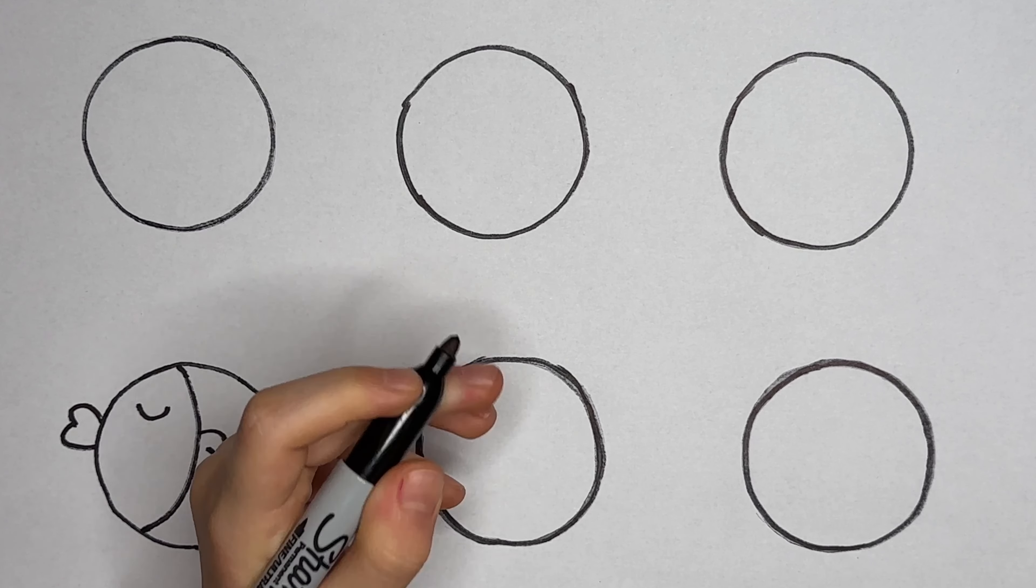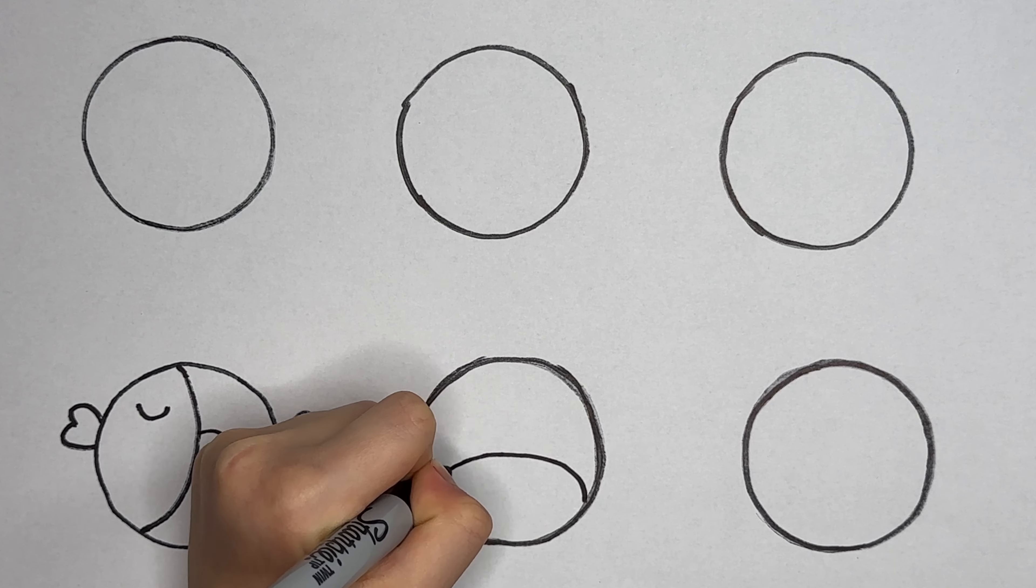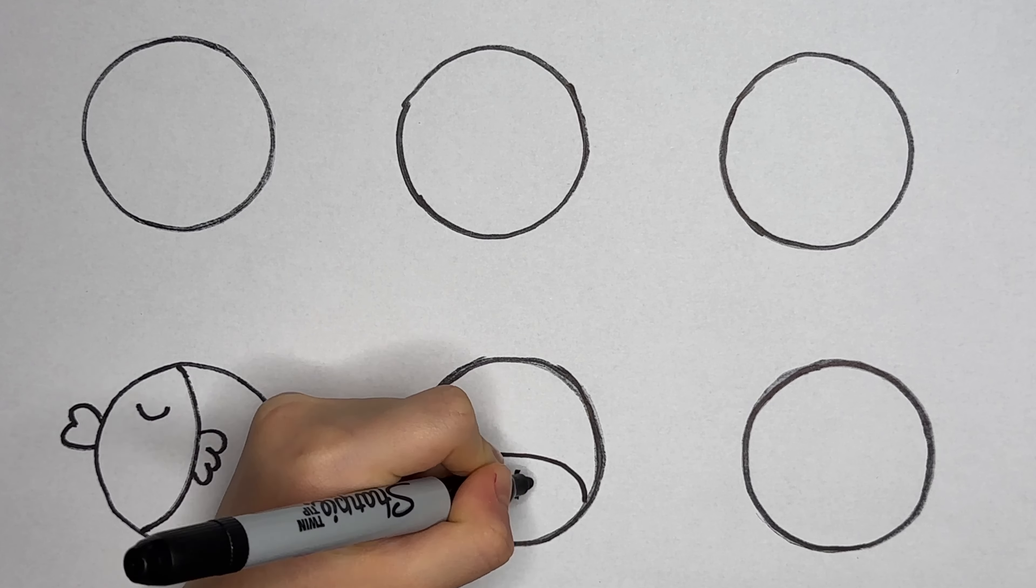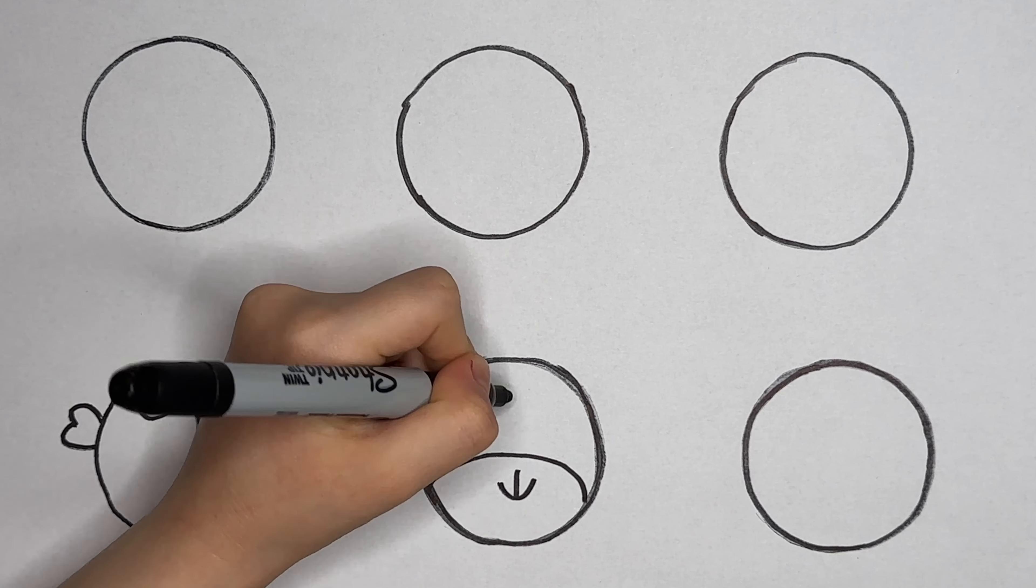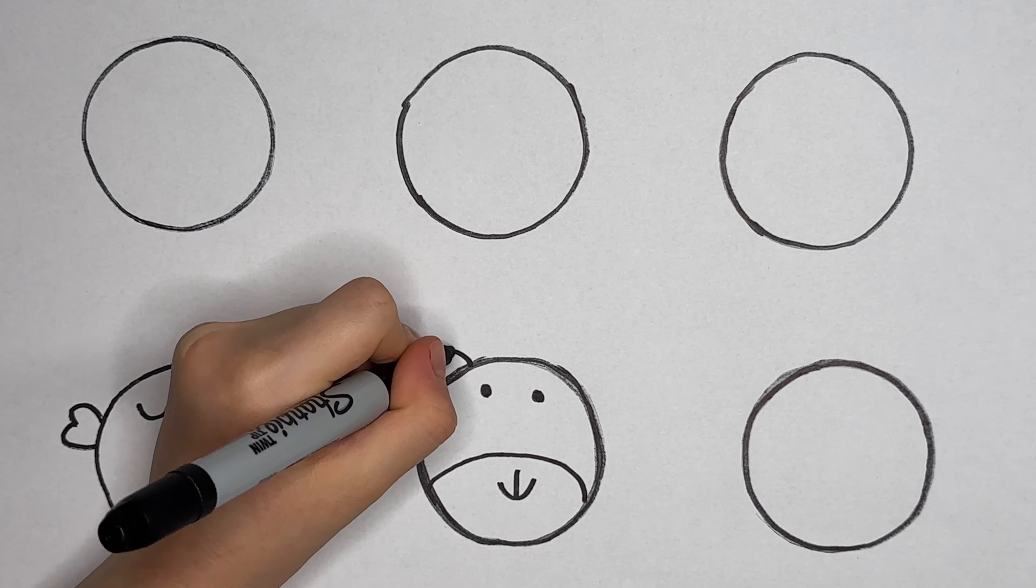The second one is going to be a bear. Now we're going to draw a half oval. The nose and the mouth. Two eyes. Then two ears.